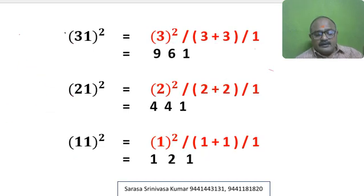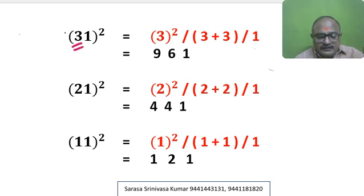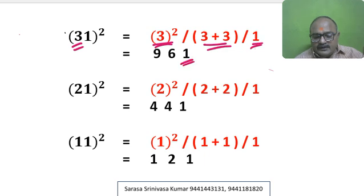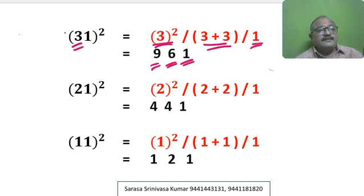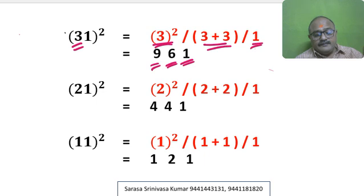31 square: 10th digit is 3. 3 square, 3 plus 3, 1 — I write here 1; 3 plus 3 is 6. 3 square is 9. So 31 square is equal to 961.